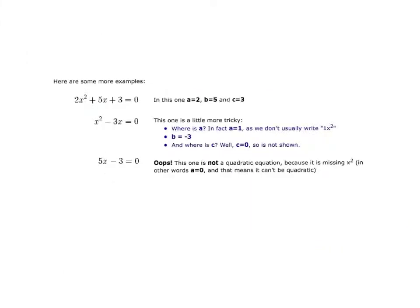Here are a couple more examples of quadratic equations. First, we have 2x squared plus 5x plus 3 equals 0 — the coefficient of x squared is 2, coefficient of the linear term is 5, and your constant is 3. A second example: x squared minus 3x equals 0. Here a equals 1, b equals negative 3, and because there's no c value, c is just equal to 0, and that's okay — c can equal 0.